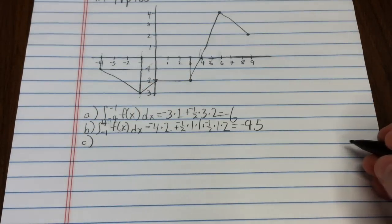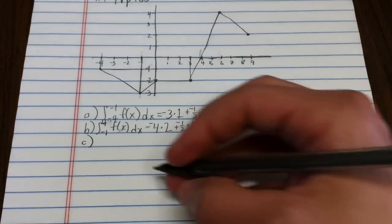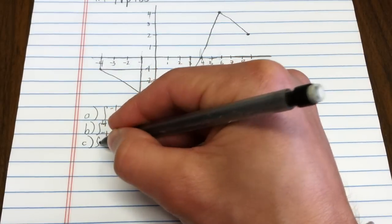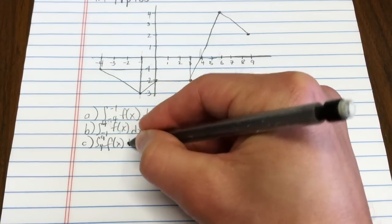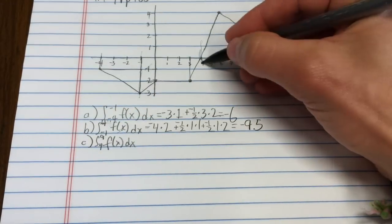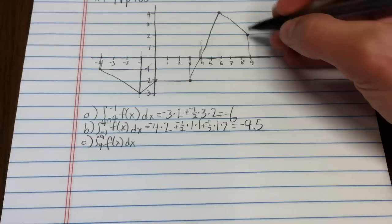So on to the next one, and it's the integral from 4 to 9 of f of x dx. Isn't that exciting? So from here to there.